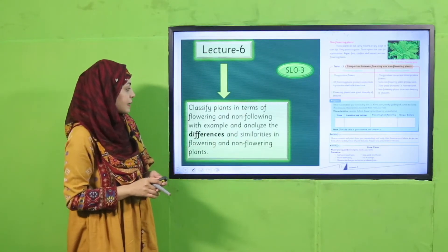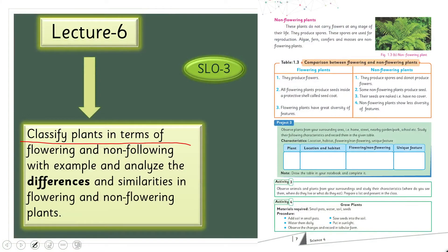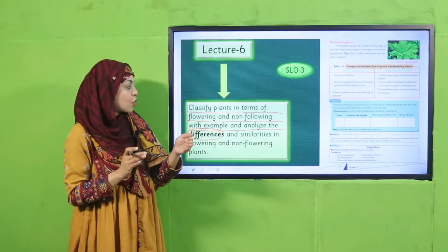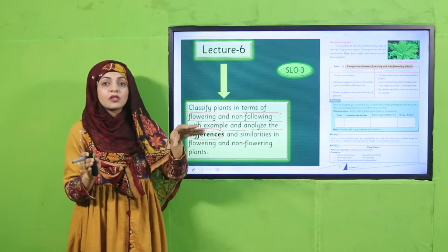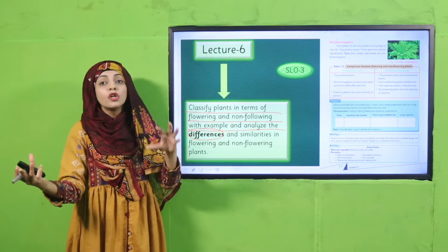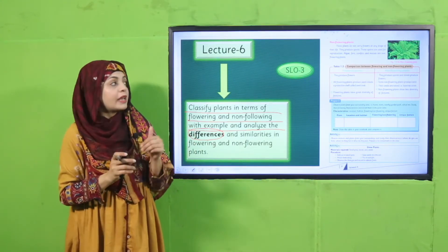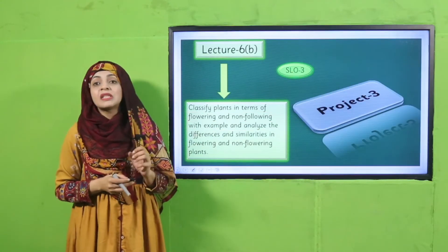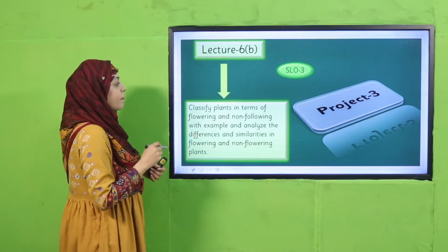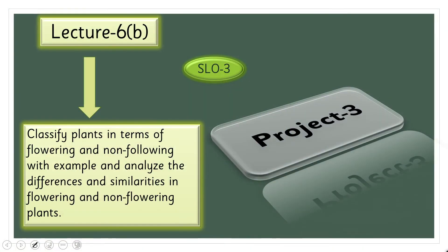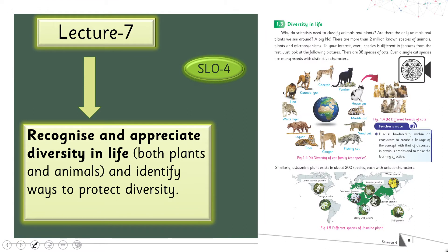In lecture number five, students will study the similarities among vertebrates and invertebrates. Then in lecture number six, students will classify plants in terms of flowering and non-flowering with examples and analyze the differences. Plants will be grouped and classified on the basis of whether they are flowering or non-flowering. Lecture six-B will include a project on flowering and non-flowering plants.